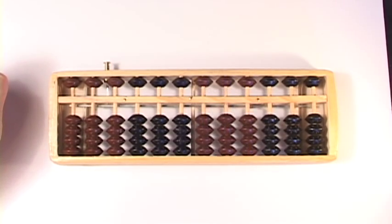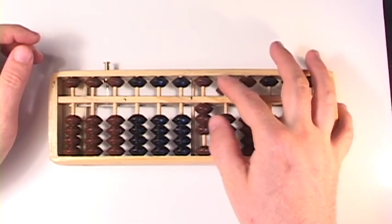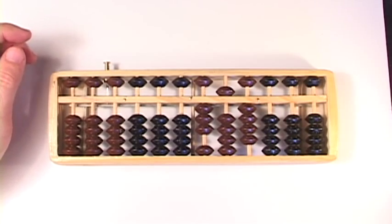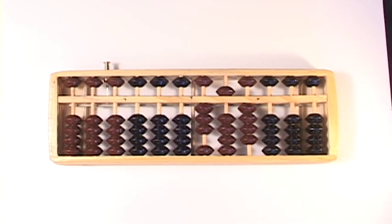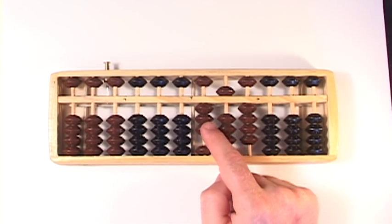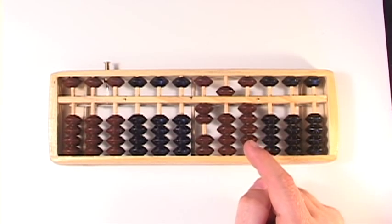Alright, let's try 354 minus 185. 3, 5, and a 4. 354 minus 185. Alright, so 100. We take away 1 in the 100s column.